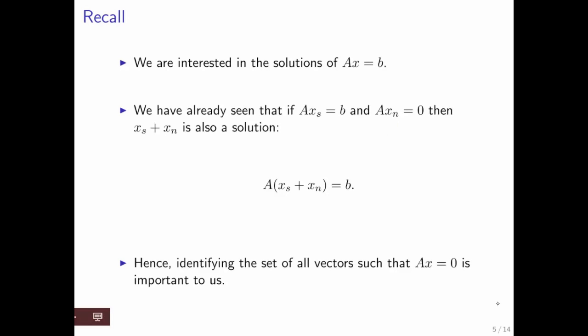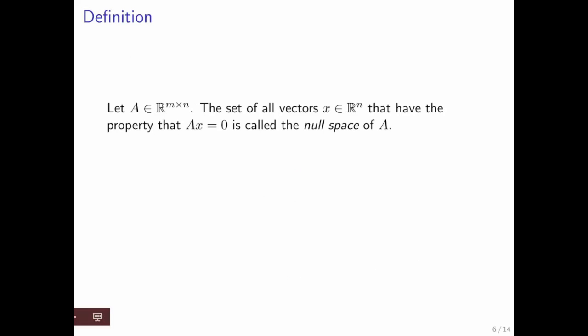What we would like to do is have a way of identifying the set of all vectors that map to 0, because it's that set of vectors that can be added to a specific solution to come up with all possible solutions for Ax = b. The set of all vectors that are mapped to 0 by matrix A is called the null space of A.